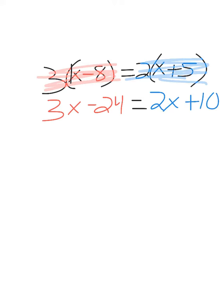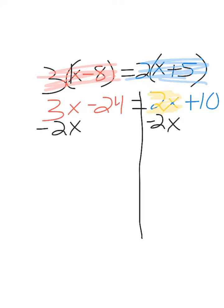Now I'm going to look for like terms on each side of the equation. 3x and 24 are not alike, neither are 2x or 10. So I am going to move my variable from the right to the left — I'm going to move positive 2x. Since it's positive, I will subtract it. It has to go underneath the other x, so I end up with 1x minus 24 equals positive 10.